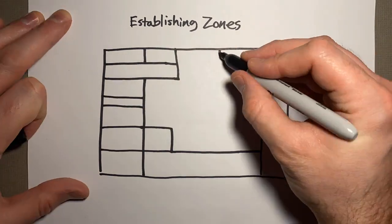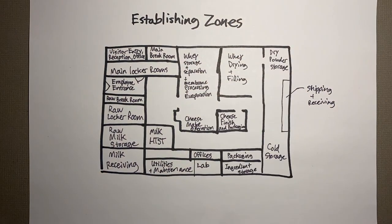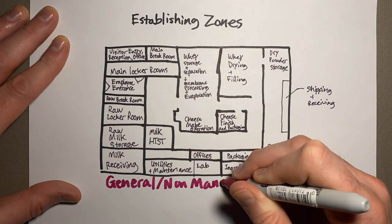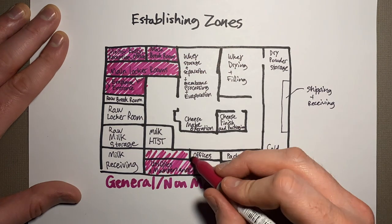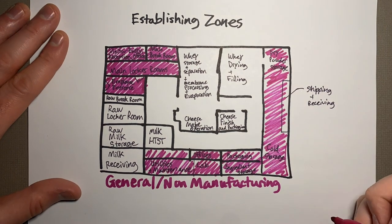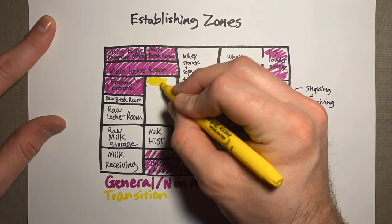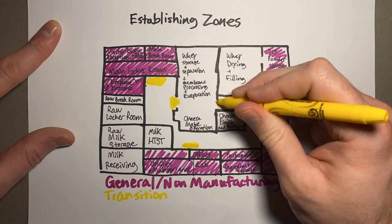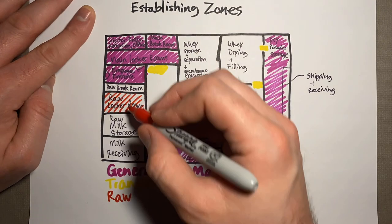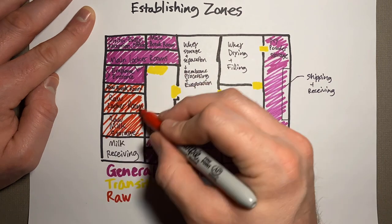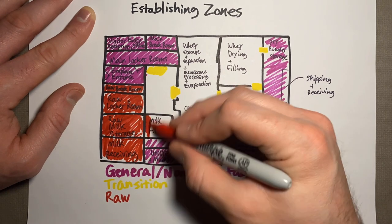Let's do a visual representation of what this zoning looks like on an example floor plan of a plant. Starting with the general non-manufacturing areas: visitor entrance, main locker room, employee entrance, maintenance, ingredients storage, offices, and shipping and receiving dock. At transition areas, you want to make sure you're washing hands, switching out shoes, and getting proper PPE on. For raw areas like the raw locker room, raw milk storage, and milk receiving, those areas directly deal with unpasteurized product or you are preparing to enter an area where product is not pasteurized.